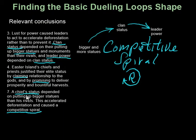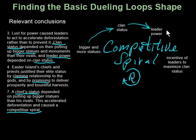The last paragraph talks about what a chief's status depends on. This implies that leaders are going to have an incentive to maximize clan status so that they can get more power. That insight can be captured in this particular node — there's an incentive of leaders to maximize clan status. So let's draw in the relationship: because the more leader power, the more the incentive in the system for leaders to increase that power by maximizing clan status.